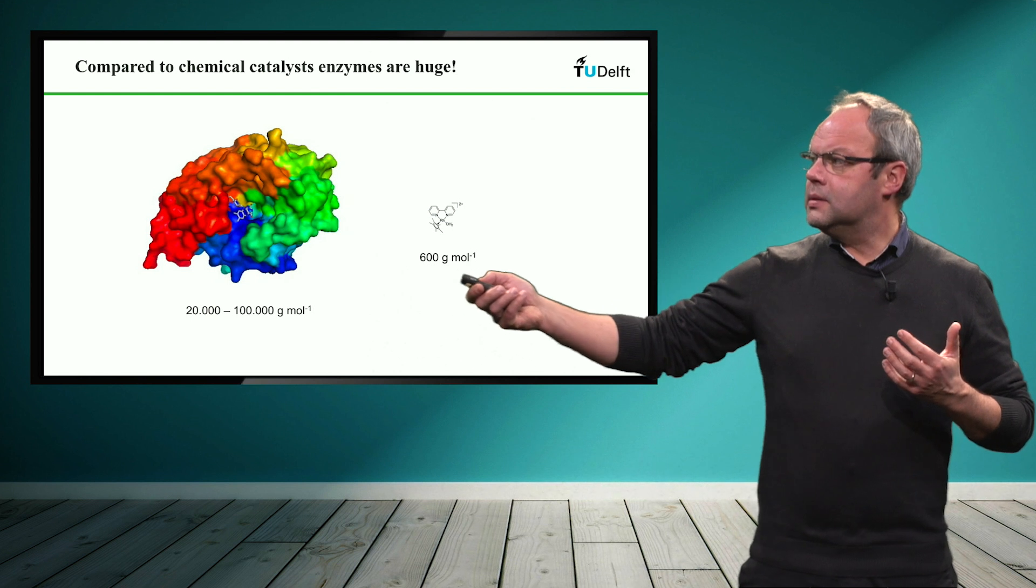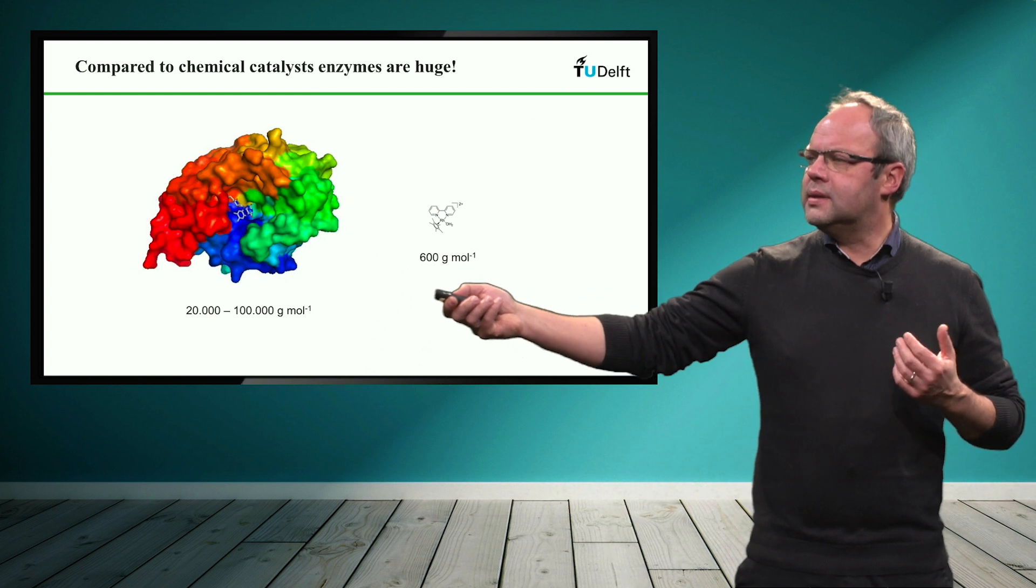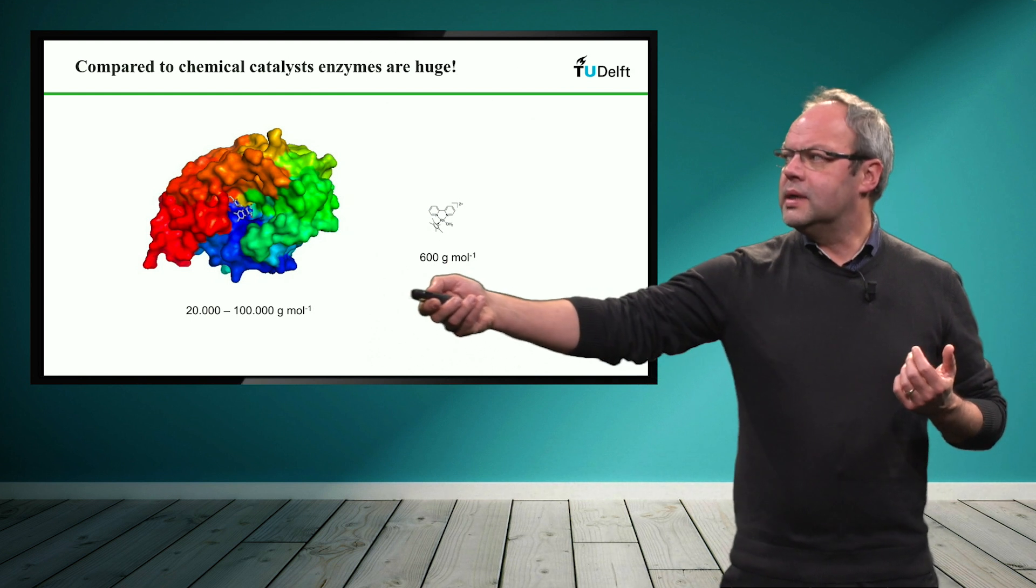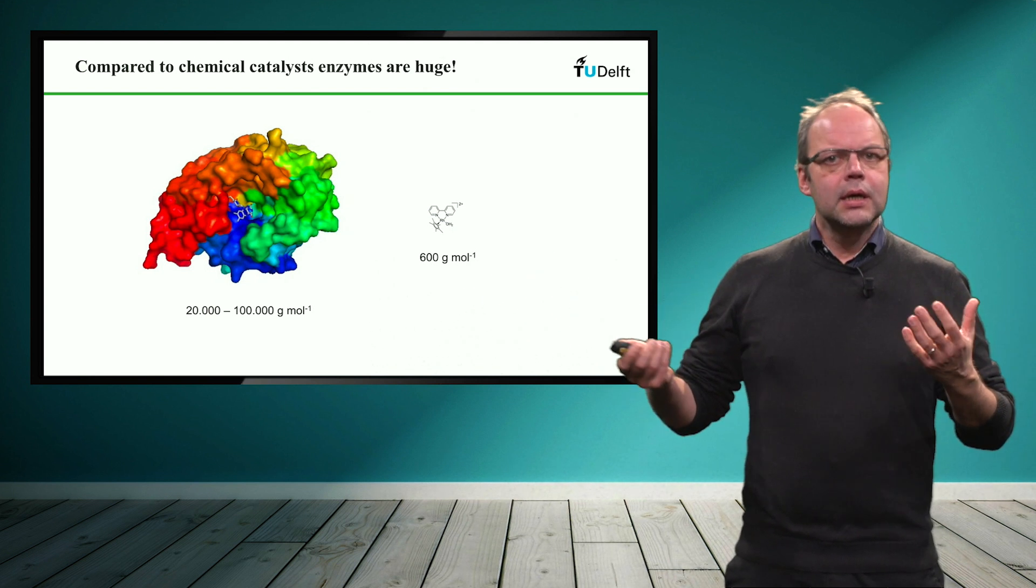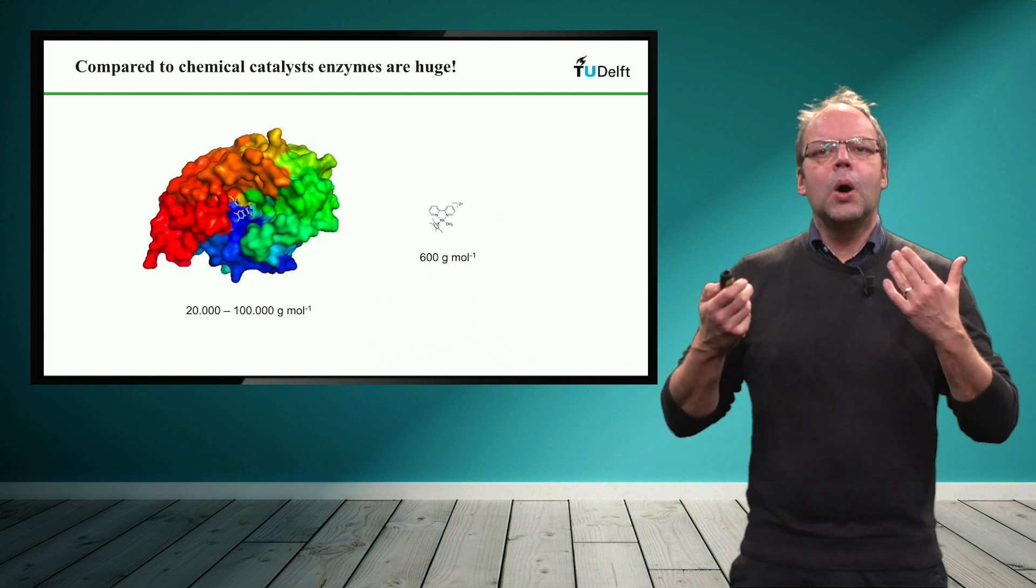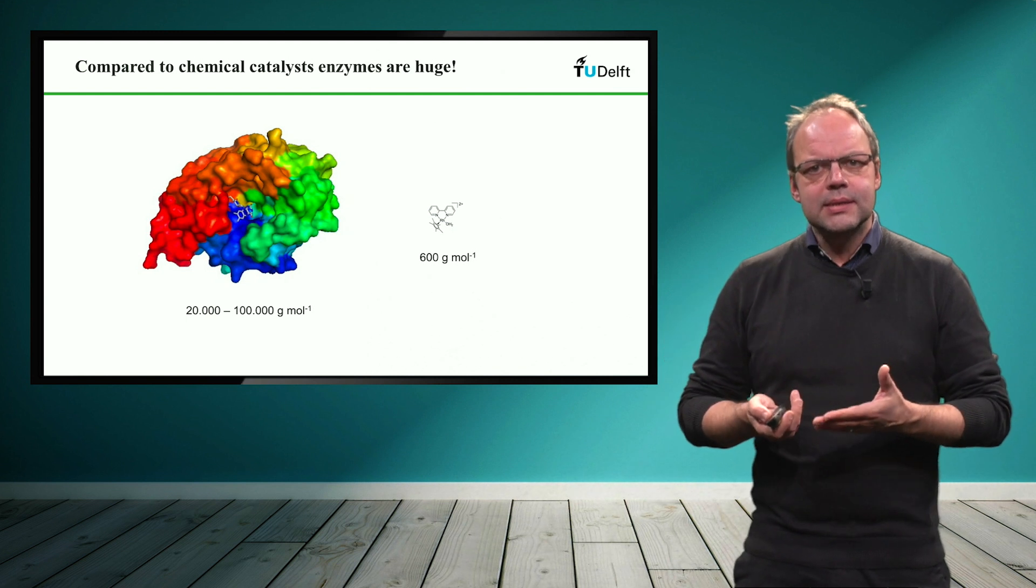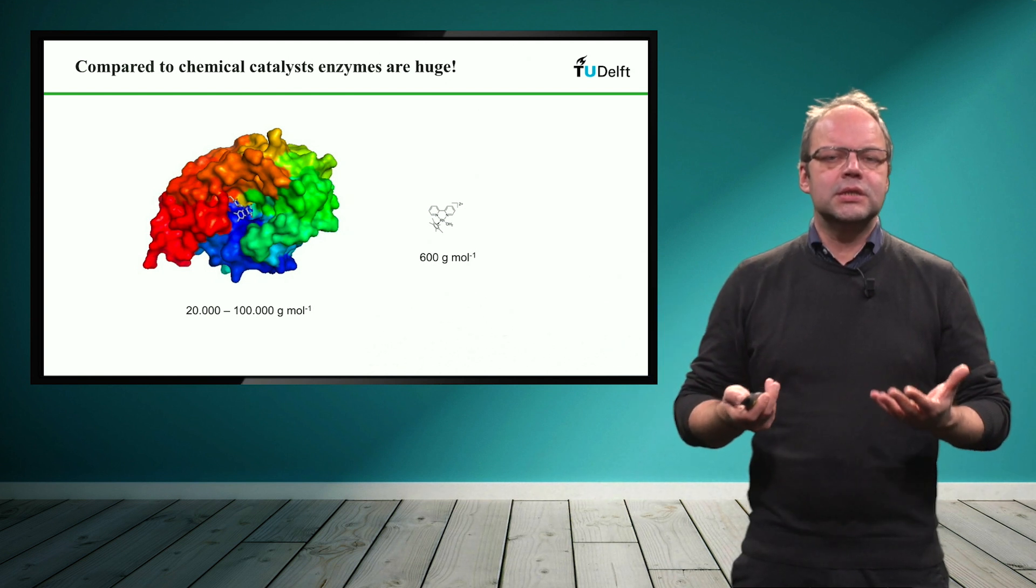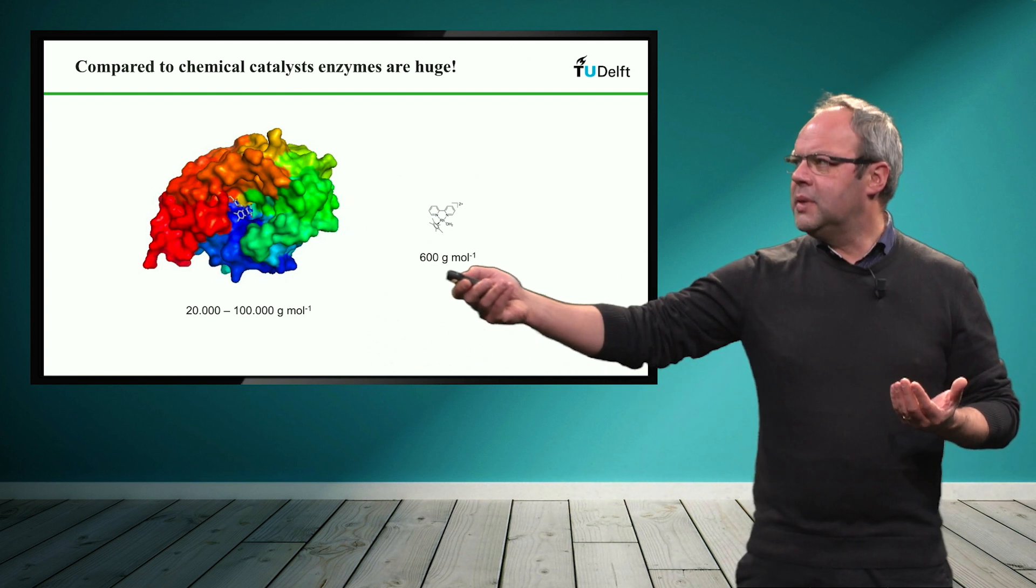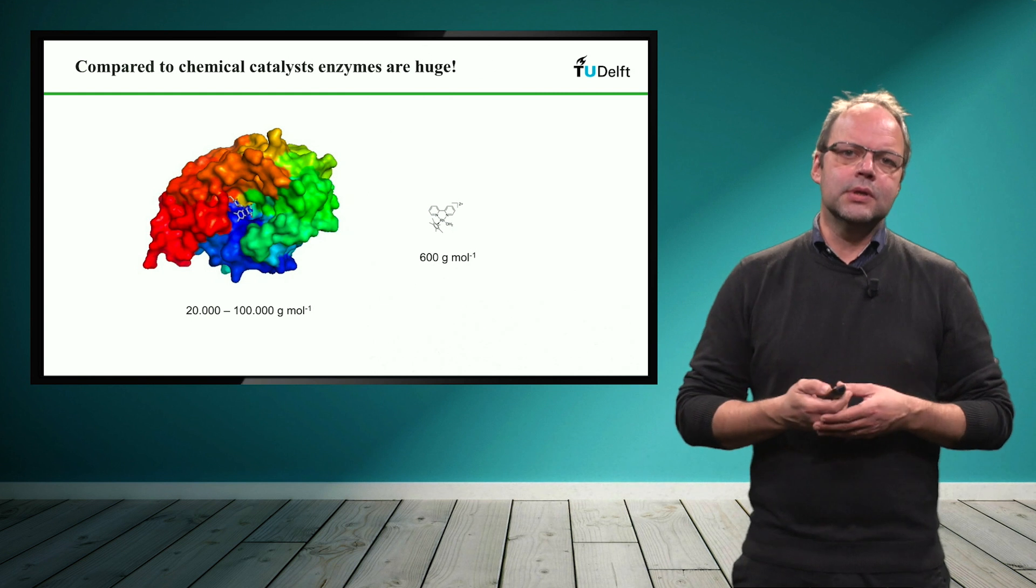A normal chemical catalyst usually tends to be rather small, whereas enzymes are up to 50 times heavier than normal chemical catalysts. So you might also ask the question, why does nature invest so much into the synthesis, into the build-up of such huge structures, while seemingly a small chemical catalyst can do the job as well?